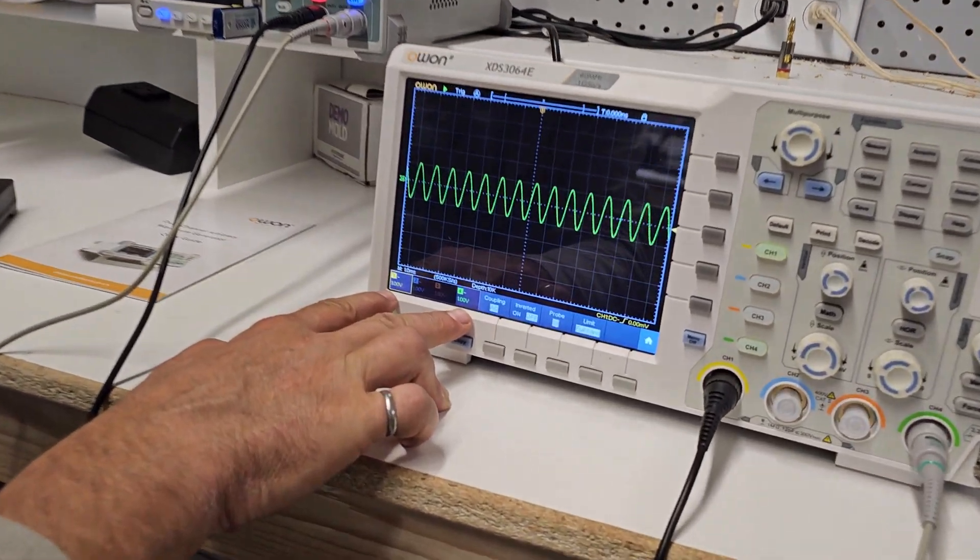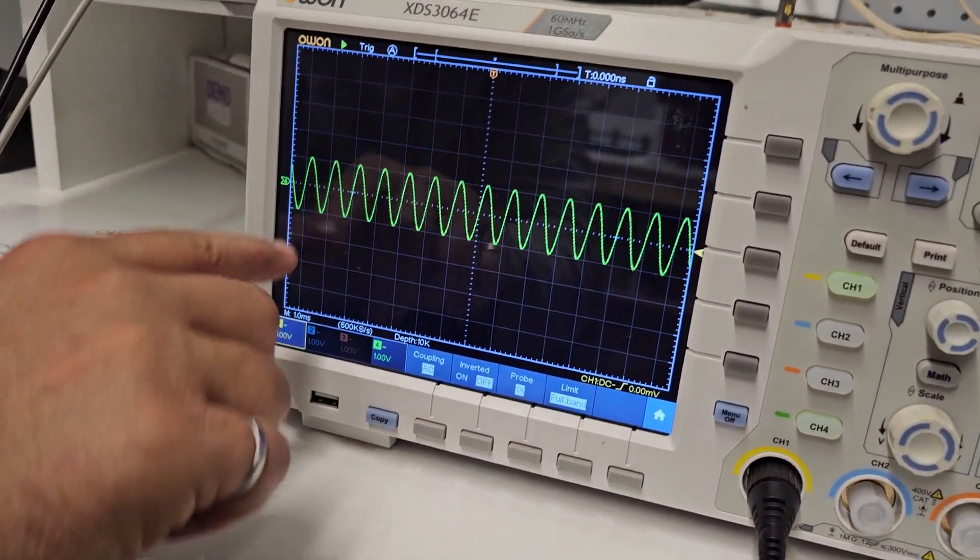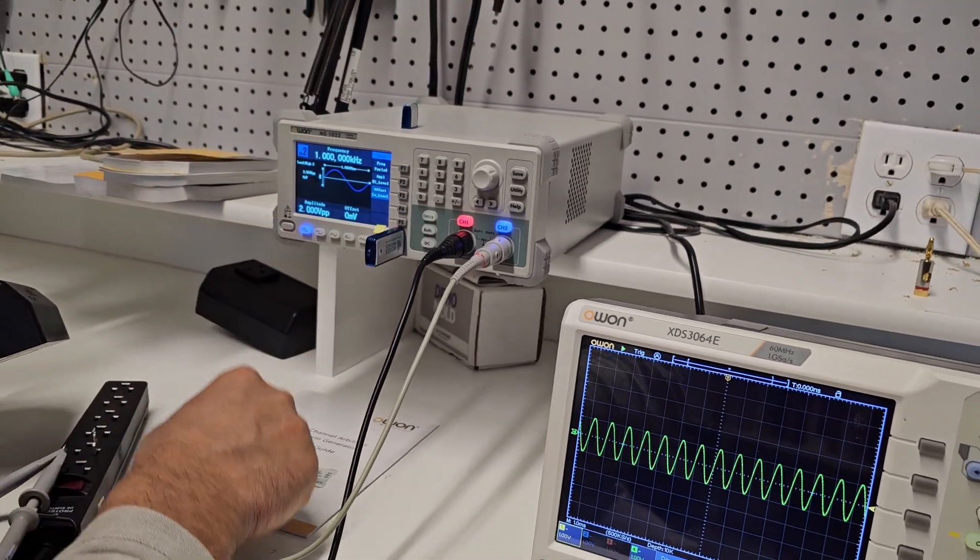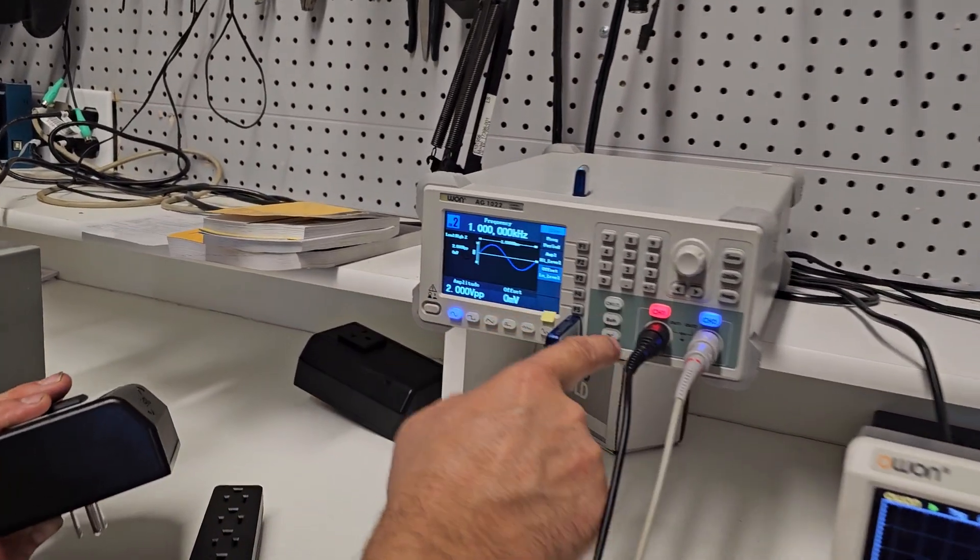if you look closely, both of these are at 1 volt up, 1 volt down, so 2 volts peak to peak. If we come back to our screen here, we can see both.